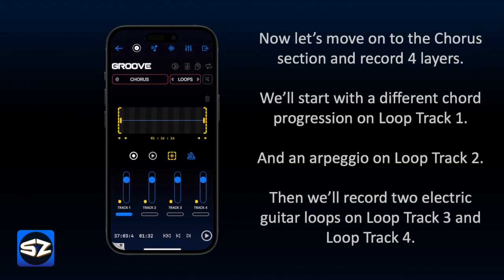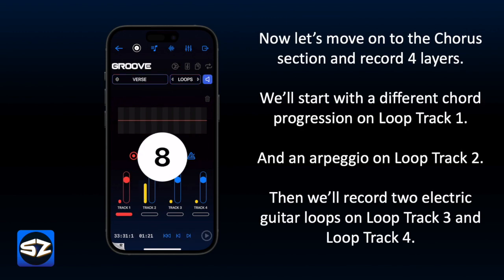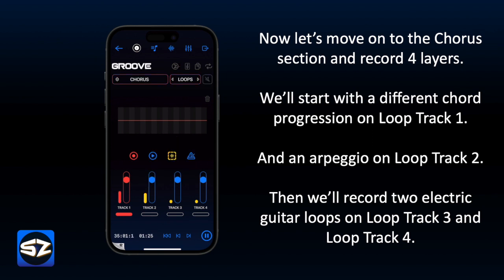Now let's move on to the chorus section and record four layers. We'll start with a different chord progression on loop track 1, and an arpeggio on loop track 2. Then we'll record two electric guitar loops on loop track 3 and loop track 4.